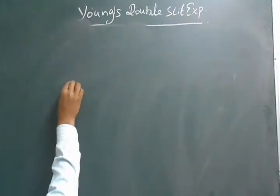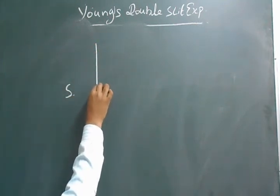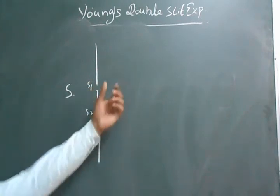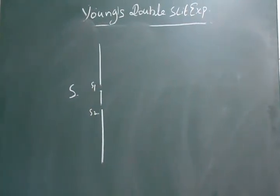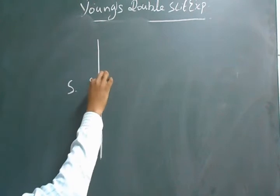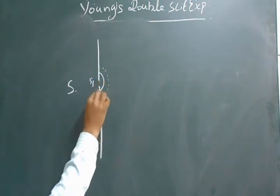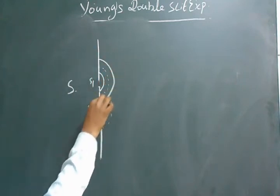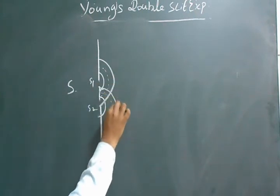In Young's double-slit experiment, we have a source S provided with two slits S1 and S2. S1 and S2 are two slits that provide us with a coherent source. A coherent source is one which has the same amplitude, frequency, and wavelength of light waves. S1 gives a crest, and at the same time S2 also gives a crest, then trough of the first wave and trough of the second, and then crest of the first and crest of the second.